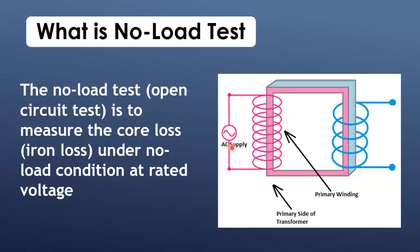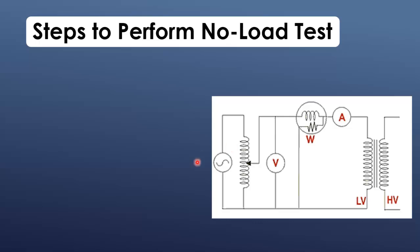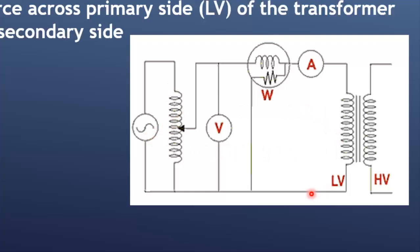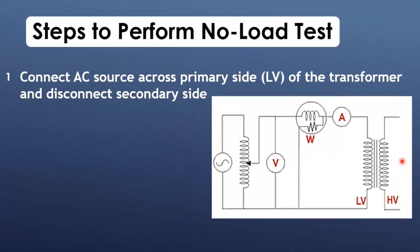Now we see how to perform no-load test of transformer. Connect AC supply across primary side or low-voltage side of the transformer, and disconnect or open the secondary side or high-voltage side of transformer.